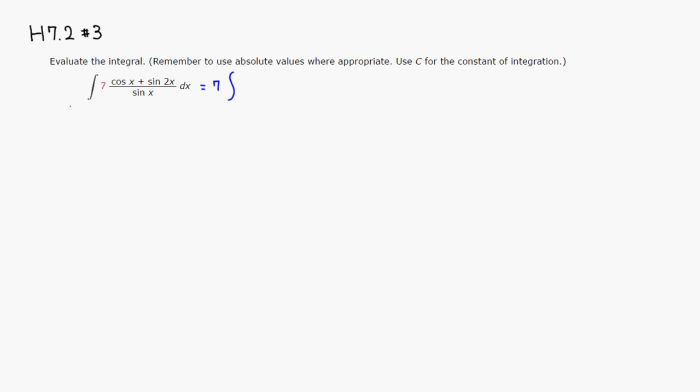I'm gonna split this fraction into a couple of smaller fractions. So you have cosine of x over sine of x. So I'm gonna write cosine of x divided by sine of x.